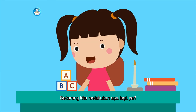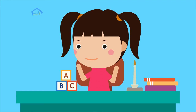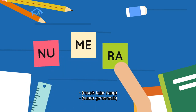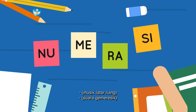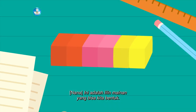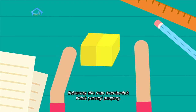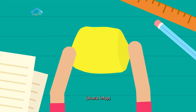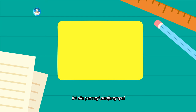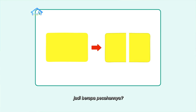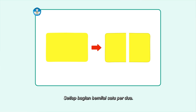Sekarang, kita melakukan apa lagi ya? Oh iya. Aku punya lilin mainan. Ini adalah lilin mainan yang bisa kita bentuk. Sekarang, aku mau membentuk kotak persegi panjang. Ini dia persegi panjangnya. Bentuknya masih satu bagian yang utuh. Kalau kita potong menjadi dua bagian sama besar, jadi berapa pecahannya? Iya, benar. Setiap bagian bernilai satu per dua.